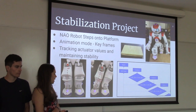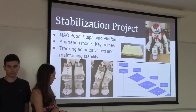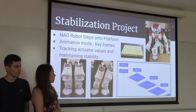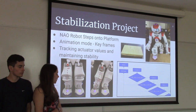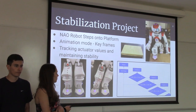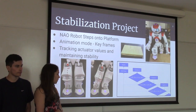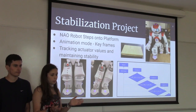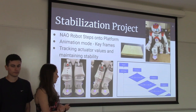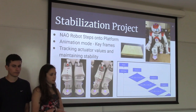Once we figured out the ranges, we developed a flowchart — this is just a segment of it because it's fairly repetitive. For each key frame, we found values within which the NAO would still stand up. If it falls within that range, it moves to the next frame. If it doesn't fall within that range, it needs to reset because that means it fell over.